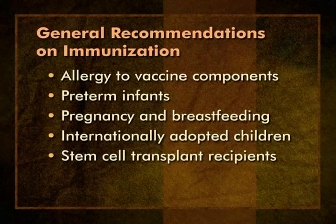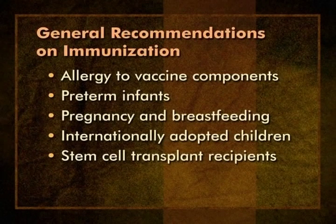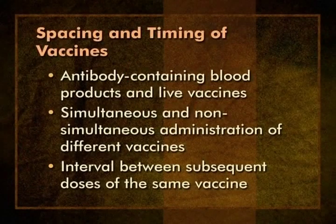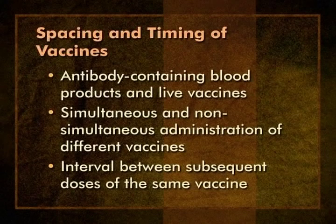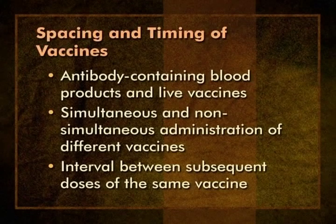We would like to discuss three issues from the general recommendations that relate to the spacing and timing of vaccines. The three interval issues are: the timing of antibody-containing blood products and live vaccines; simultaneous and non-simultaneous administration of different vaccines; and the interval between subsequent doses of the same vaccine. These issues come up frequently in vaccination practice and we get many questions about them.